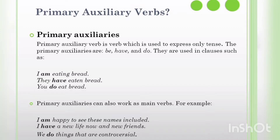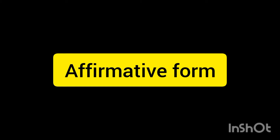For example: I am happy to see these names included. I have a new life now and new friends. We do things that are controversial. الأفعال المساعدة الأولية هي أفعال تستعمل لتكوين الزمان، وهي: Be, have, and do. وتستعمل أيضاً كأفعال أساسية لها معناها الخاص.